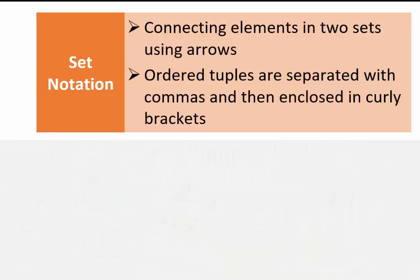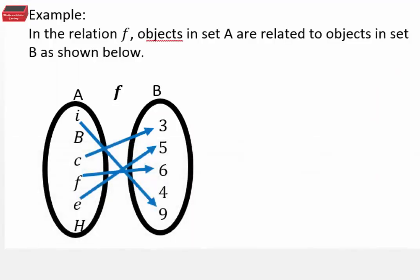There are different ways that we can use to represent our relations. One of them is called the set notation. In the set notation, you're connecting elements in two sets using arrows or you can represent them as ordered tuples separated with commas and then enclose them in curly brackets. So for example, in the relation F below, you have objects in A that are related to objects in set B. And the representation of relations is through arrows going from objects in A to objects in B. So you have small letter i with an arrow going to object 9 in set B. Letter c goes to 3 and so on.